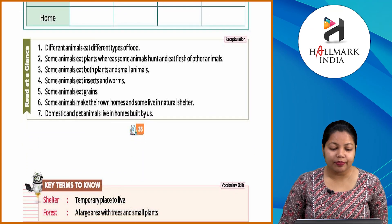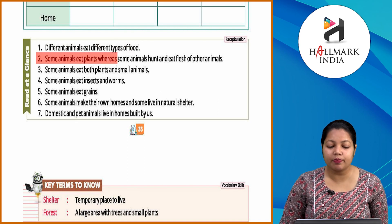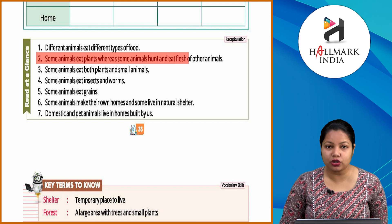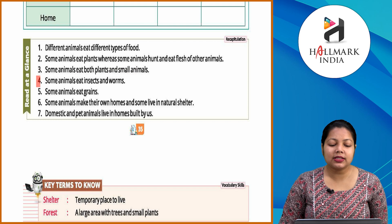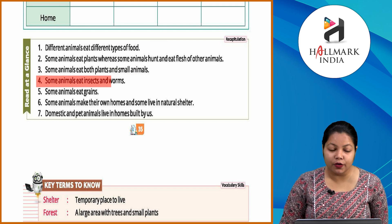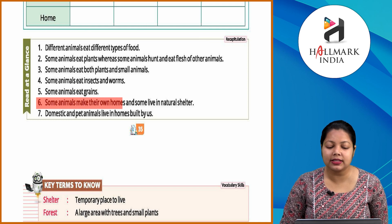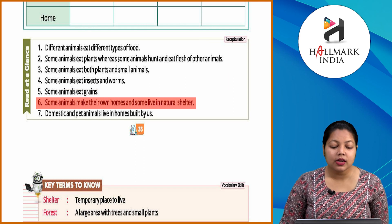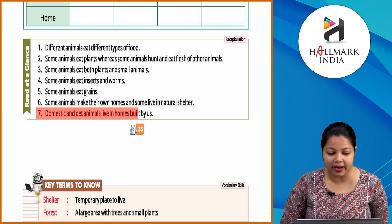Read at a glance: different animals eat different types of food. Some animals eat plants whereas some animals hunt and eat the flesh of other animals. Some animals eat both plants and small animals. Some animals eat insects and worms. Some animals eat grains. Some animals make their own homes and some live in natural shelters. Domestic and pet animals live in homes built by us.